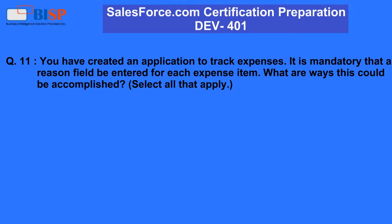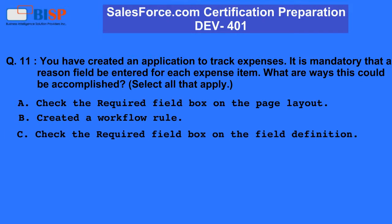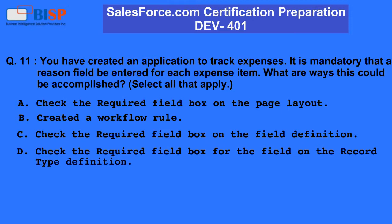Question 11: You have created an application to track expenses. It is mandatory that a reasoned field be entered for each expense item. What are ways this could be accomplished? A. Check the required field box on the page layout. B. Create a workflow rule. C. Check the required field box on the field definition. D. Check the required field box for the field on the record type definition. E. Create a validation rule for the field.